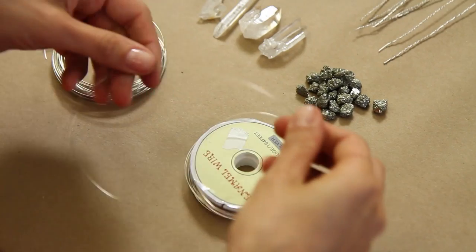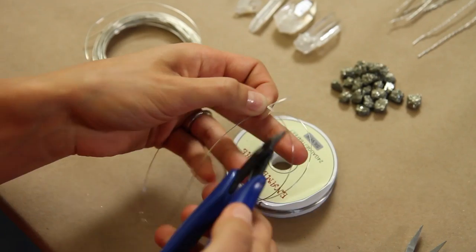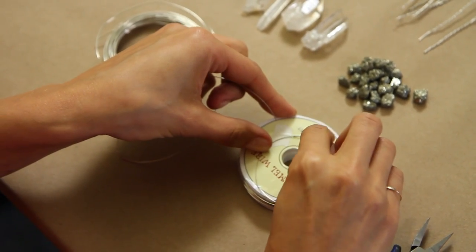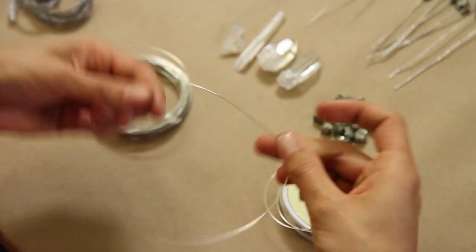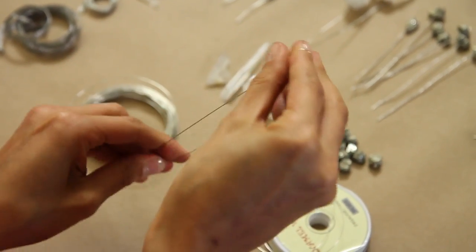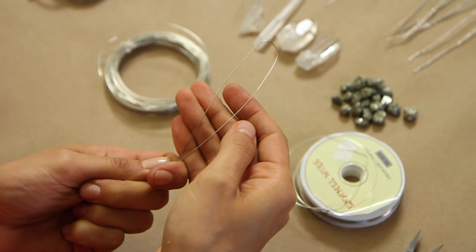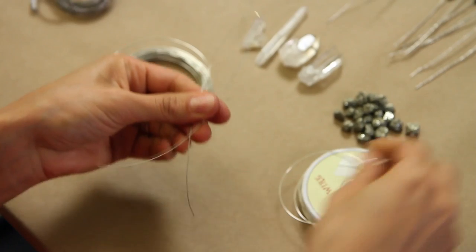So we're going to start with an 8-inch piece of 24-gauge wire that I'm just going to snip off of my spool here. I'm going to fold it in half, taking my two ends and just using my finger to make a round loop on the top. And this is where we're going to secure a piece of pyrite.